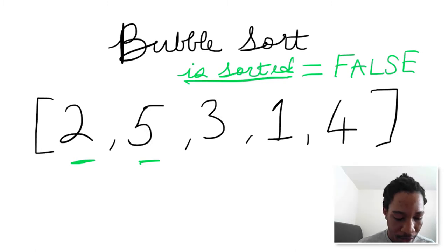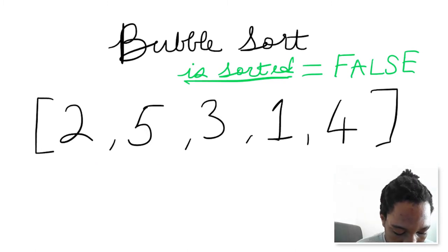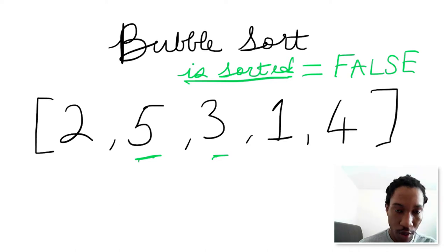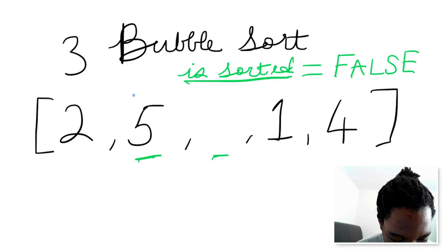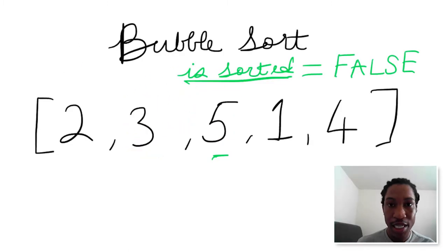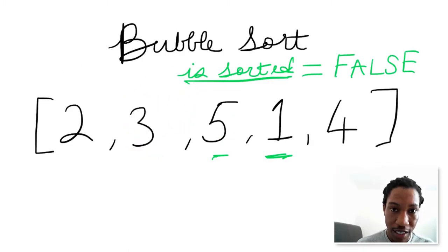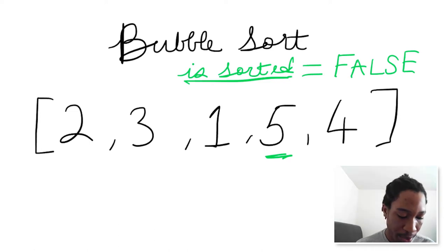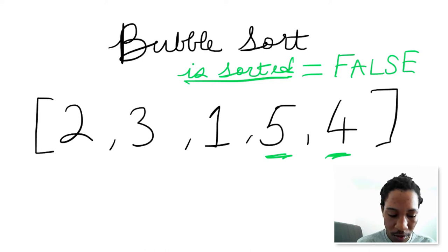And now we compare 5 and 3. Is 5 less than or equal to 3? No, 5 is actually greater than 3, so they're out of place, so we swap them. Now we compare 5 and 1. Is 5 less than or equal to 1? No, 5 is actually greater than 1, so 5 should come after 1. So they're out of place, so we swap them. And now we compare 5 and 4. Is 5 equal to or less than 4? No, 5 is actually greater than 4, so 5 should come after 4, so we swap them.